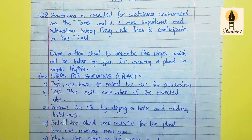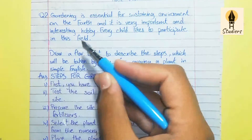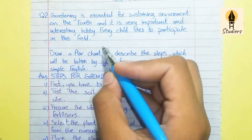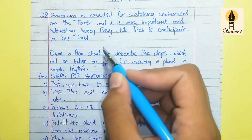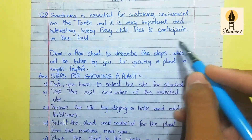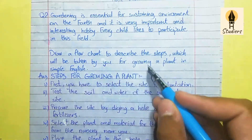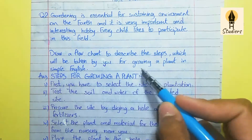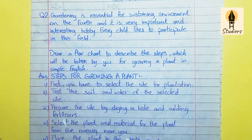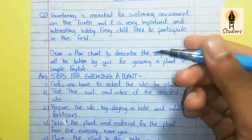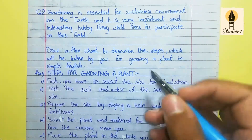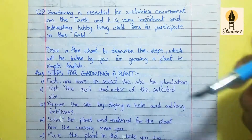Assalamualaikum to everyone. Today we will do summer vacation homework of computer. Question number 2 is: Gardening is essential for sustaining the environment on the earth, and it is a very important and interesting hobby. Each child likes to participate in this field. Draw a flowchart to describe the steps which will be taken by you for growing a plant in simple English. So, we have to write the steps on how to grow a plant, and second, we will make a flowchart.